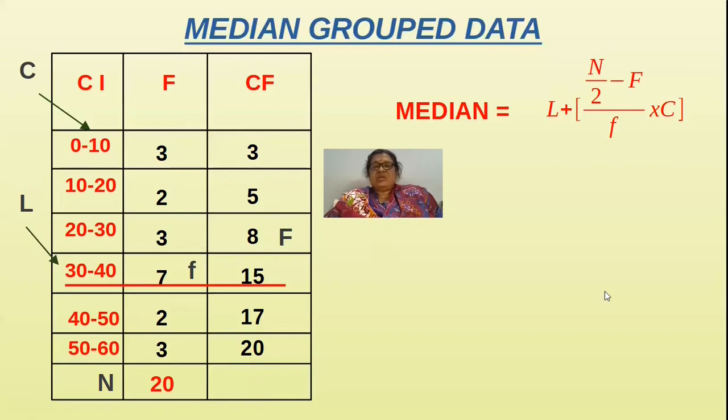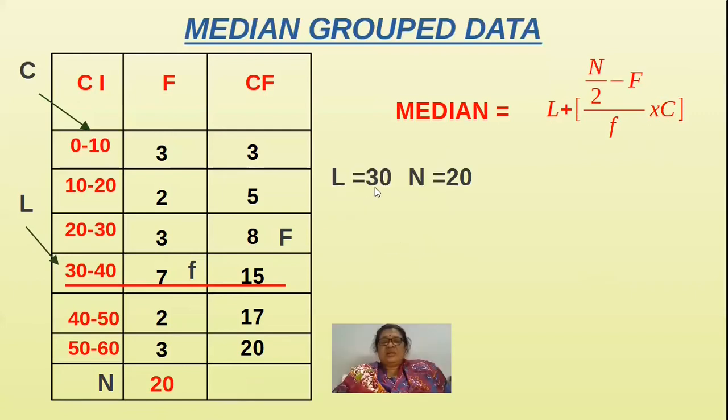Let us write down the values now. Here L is 30. How much is N? N is 20. And the length of a class, that is 10. Let us substitute. In place of L we will write 30, N is 20 by 2, and here it is minus F by small f that is 7 into 10.